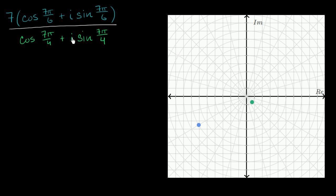This hairy-looking expression is just dividing one complex number written in blue by another complex number. Both of them are written in polar form, and we also see them plotted over here.